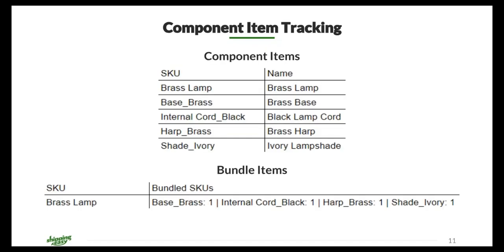The first outside-the-box bundle is component item tracking — probably the most used feature of bundles. ShippingEasy does not have raw material tracking; however, if your products are made up of whole-number quantities of component items, we will be able to track these. For example, a lamp that contains a base, a cord, a harp, and a lampshade. In the bundled CSV, you'd have a brass lamp that contains one brass base, one internal cord, one harp, and one shade. Anytime someone orders a brass lamp, each component item has one deducted from its stock.